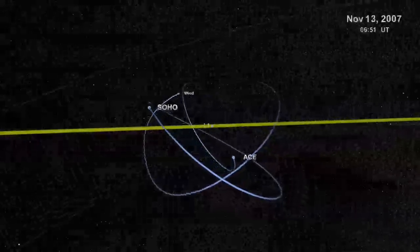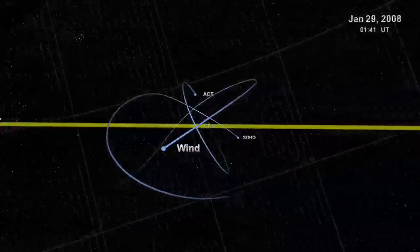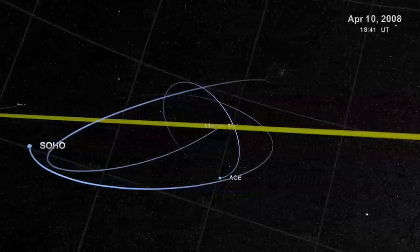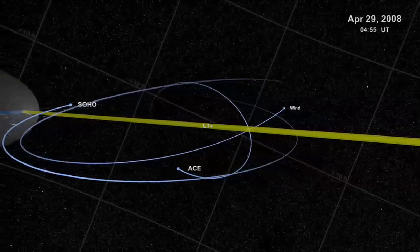Welcome to a Lagrange point. This one, L1 in space speak, denotes a relative position between the Earth and the sun, where the gravitational pull of each object is in approximate balance.